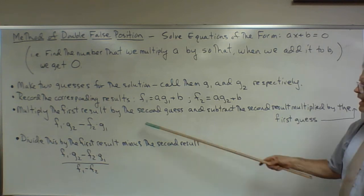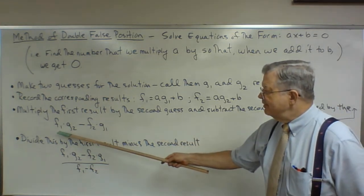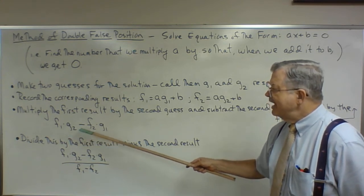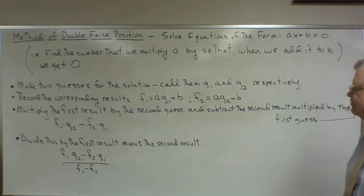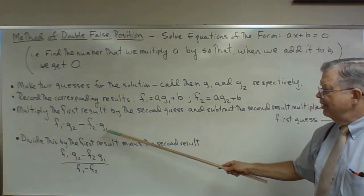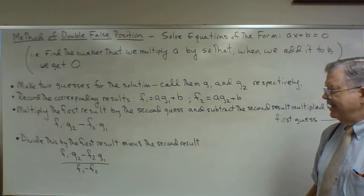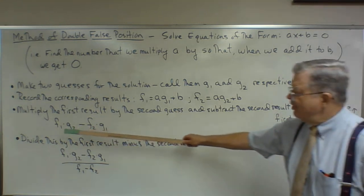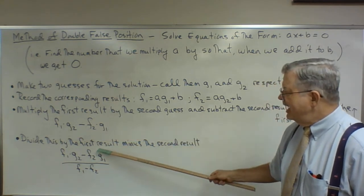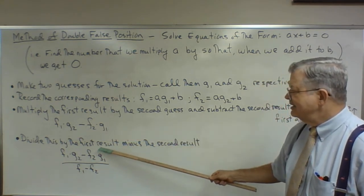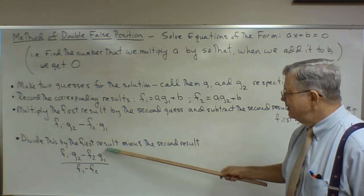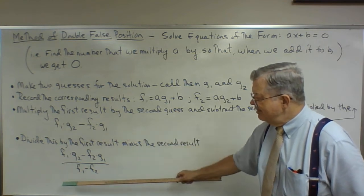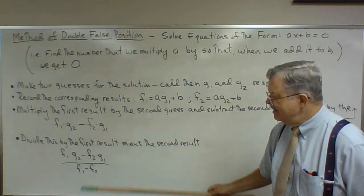Now the next step: multiply the first result by the second guess — f1 by g2 — and subtract from that the second result multiplied by the first guess. Then we take this whole expression and divide by the first result minus the second result — that is, divide by f1 minus f2.